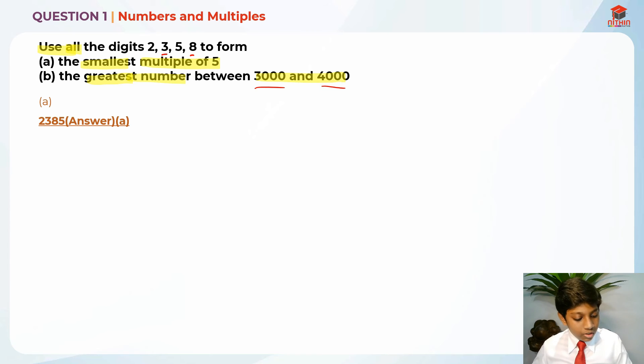So this 3 is between them, right? 2 is not between 3,000 or 4,000 and 8 is also not between them and 5 is also not between them. So the starting number should be 3.